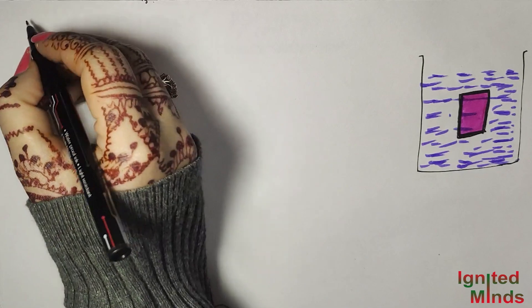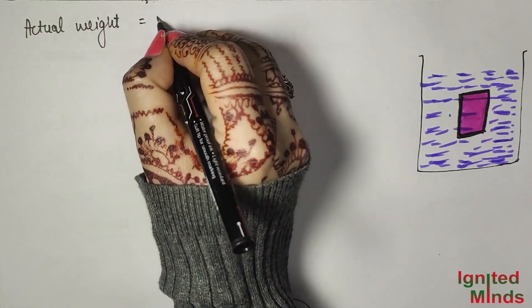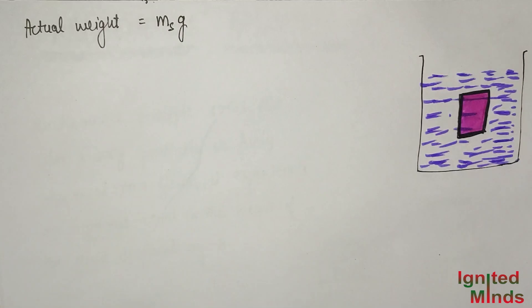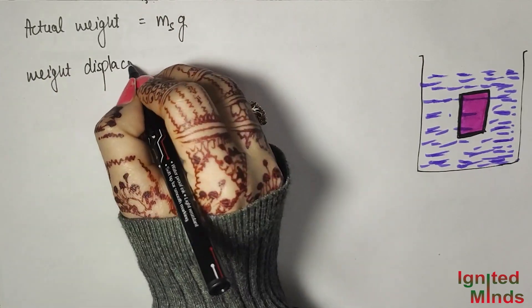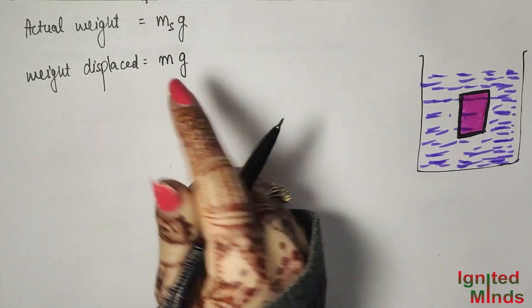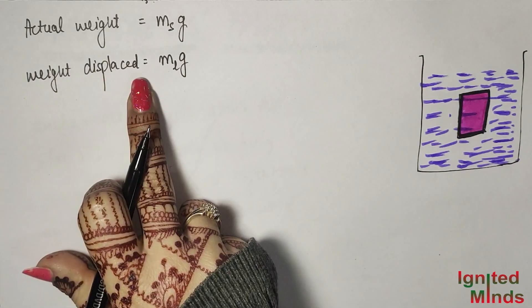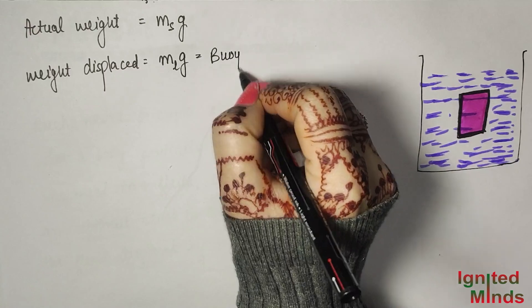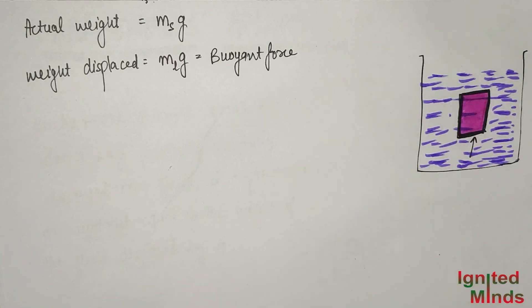We can write it like this. First, actual weight equals Mg — mass of solid into acceleration due to gravity. Then, weight of liquid displaced equals Mg — mass of liquid into g. And buoyant force equals the weight of the liquid displaced. So buoyant force equals mass of liquid into g. This is our Archimedes Principle.